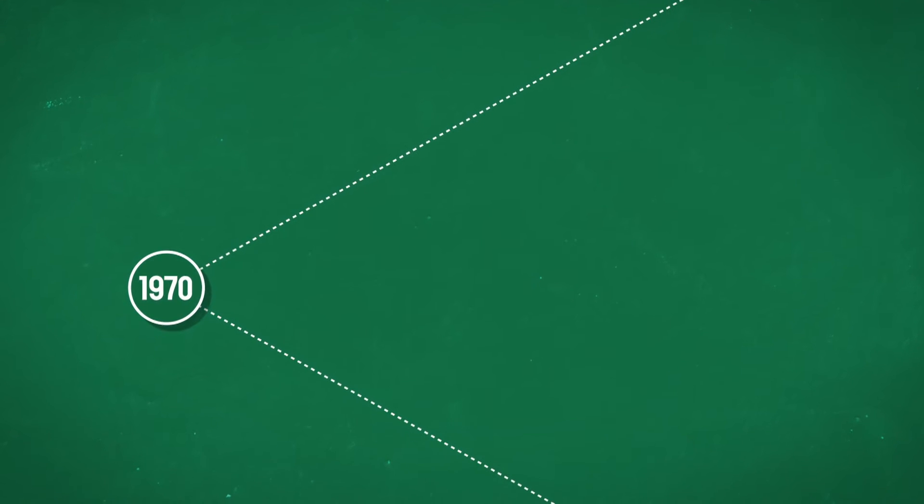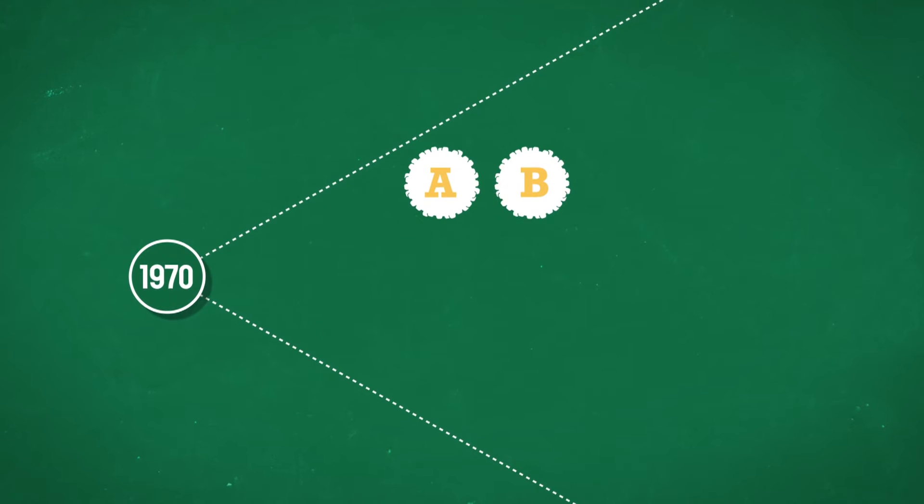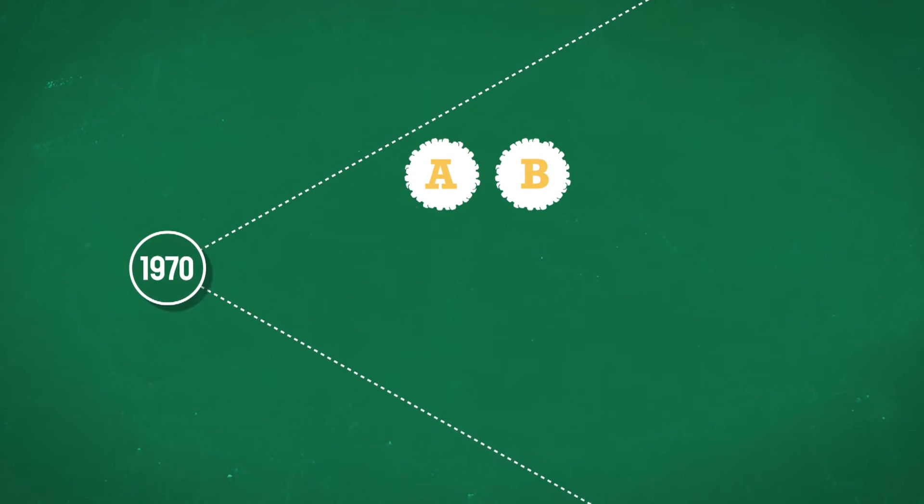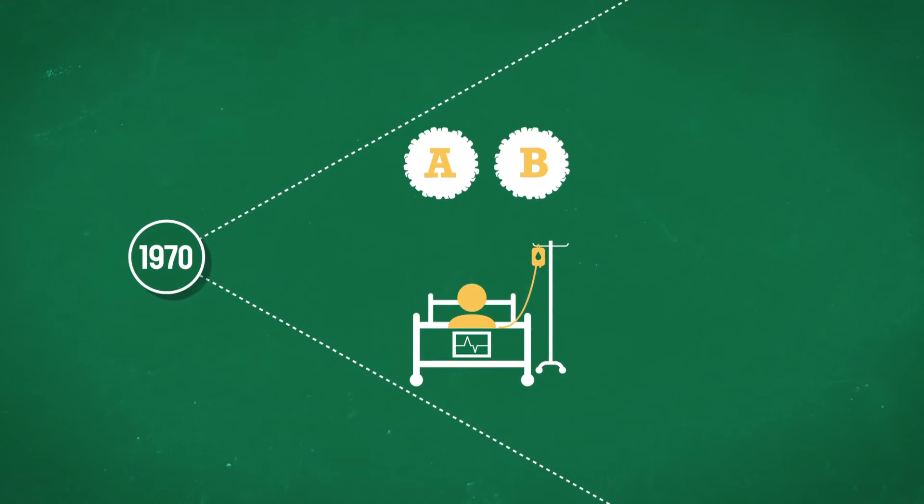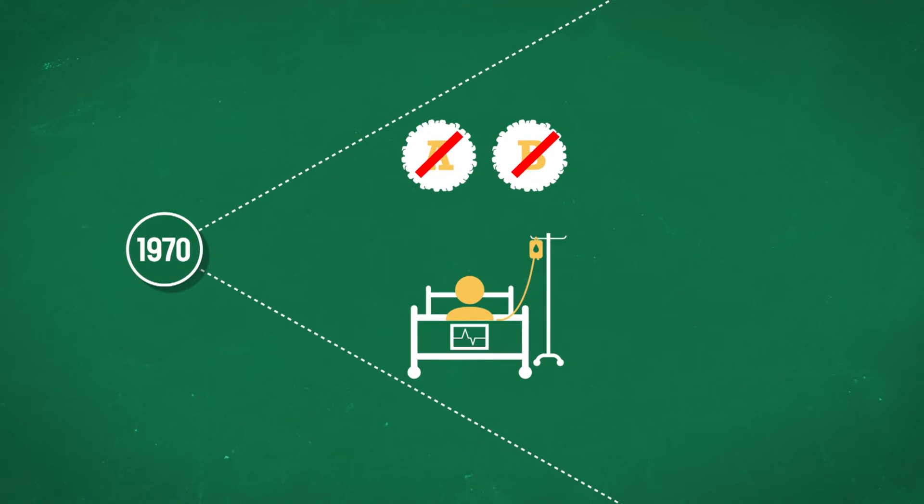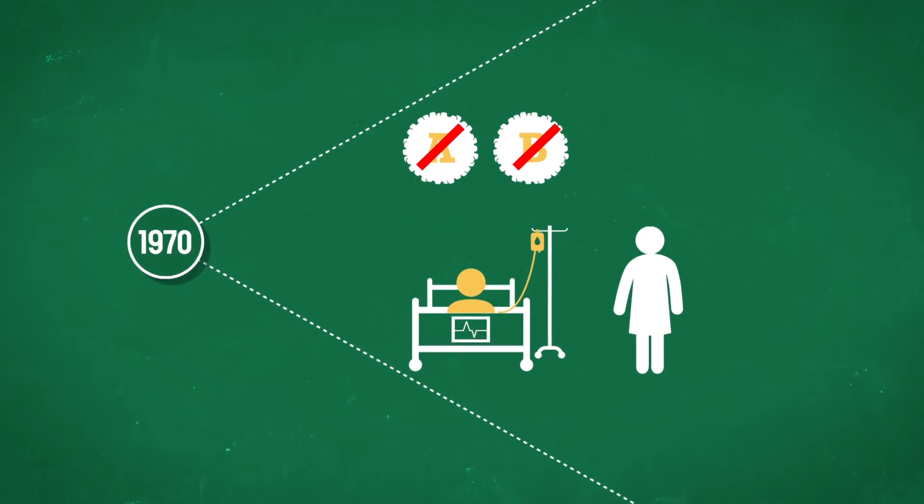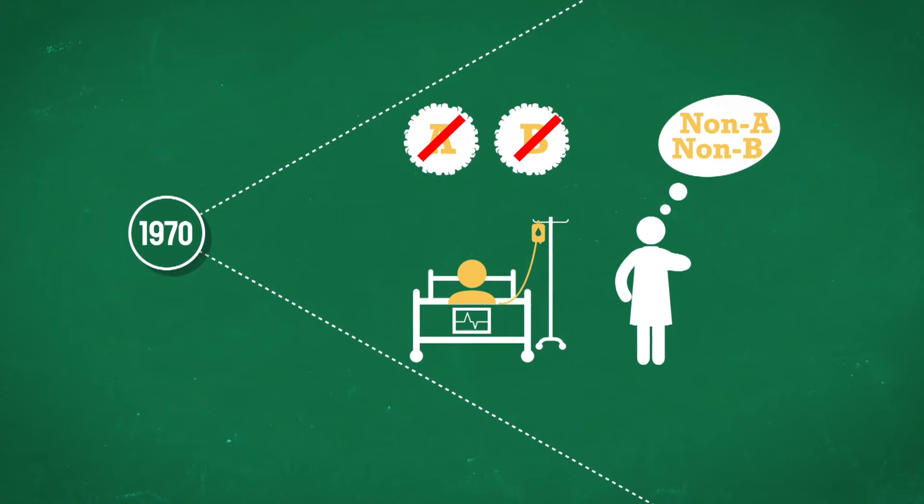At the beginning of the 1970s, the hepatitis A and B viruses were formally identified. Several years later, scientists observed that following blood transfusions, some patients became infected, not with the A or the B virus, but with a new form of hepatitis. With no great attempt at originality, they named the mysterious virus non-A, non-B hepatitis.